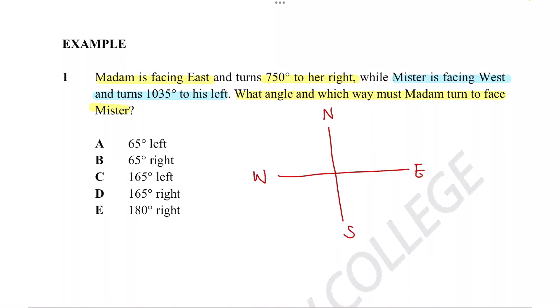We're going to start off with Madam, who is currently facing east, and she turns 750 degrees to her right, so her right would be in this clockwise direction. Now the funny thing is that if you turn a full rotation, you actually end up in the exact same easterly position you started off with, and we know that in one revolution there are 360 degrees. 750 degrees is clearly composed of multiple revolutions.